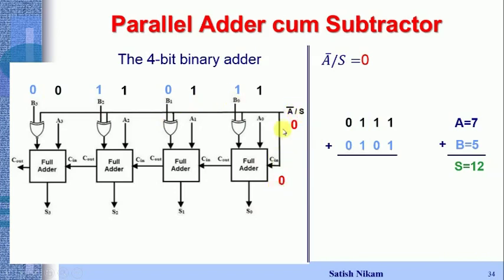Since /S = 0 is applied to one input of each XOR gate, and when one input of the XOR gate is 0, the other input passes through unchanged as the output. So each B bit appears unchanged at the XOR gate output. The C-in bit is also 0 since /S is directly connected to C-in.